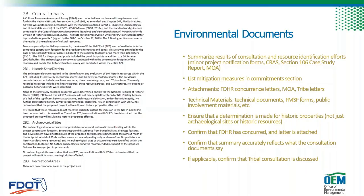The cultural resources requirements for environmental documents are straightforward and similar to those for other resource issues. You'll summarize the results of consultation and resource identification efforts in the cultural section of the document, including your determination such as 'no historic properties affected.' You'll discuss consultation with DHR or SHIPO and list any commitments made to minimize or mitigate adverse effects to historic properties. CRASSes, effects evaluations, and other technical documents should be referenced in the environmental document but not attached — those live in the project file. However, concurrence letters from SHIPO/DHR and any correspondence with tribes should be discussed in the summary and attached to your environmental document.